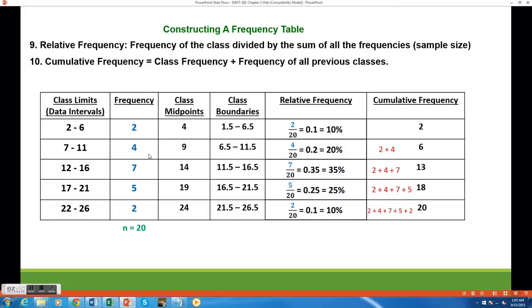I can do a similar calculation for every class. So in the second class, the frequency is 4, so the relative frequency would be 4 divided by 20, which is equal to 0.2 or 20%.